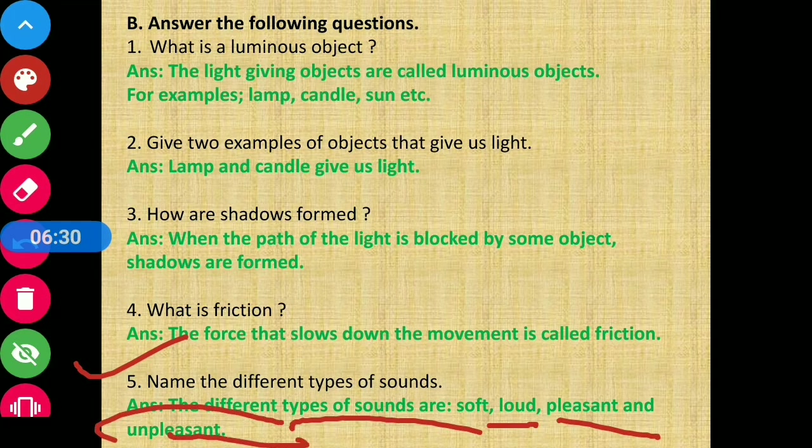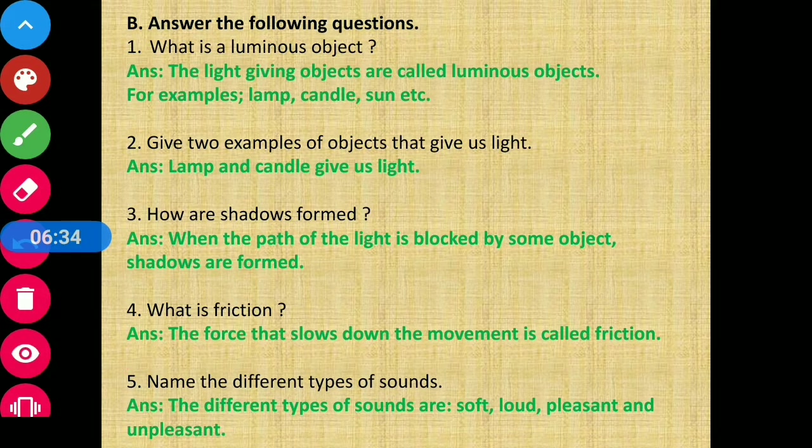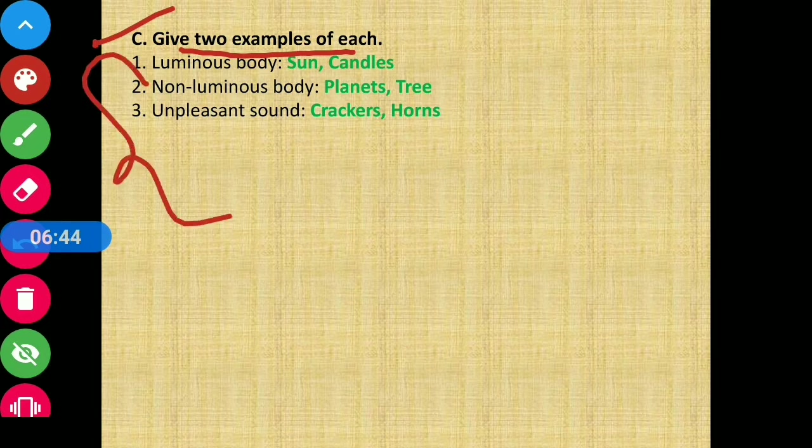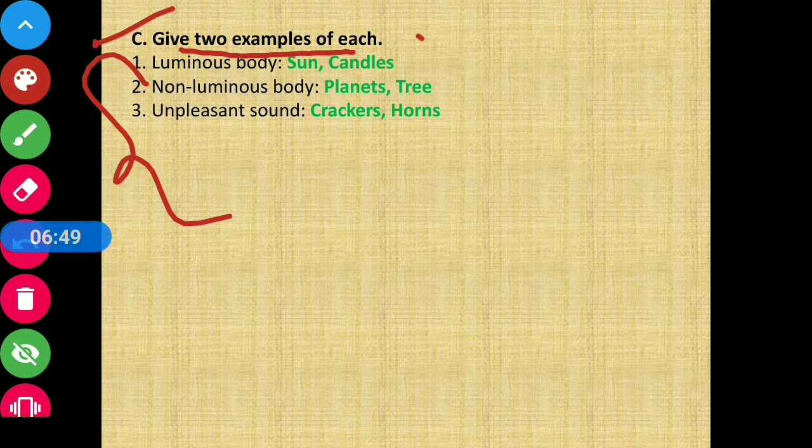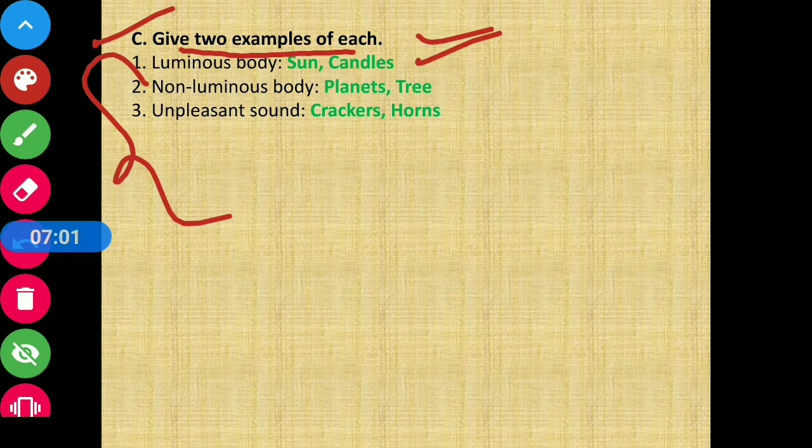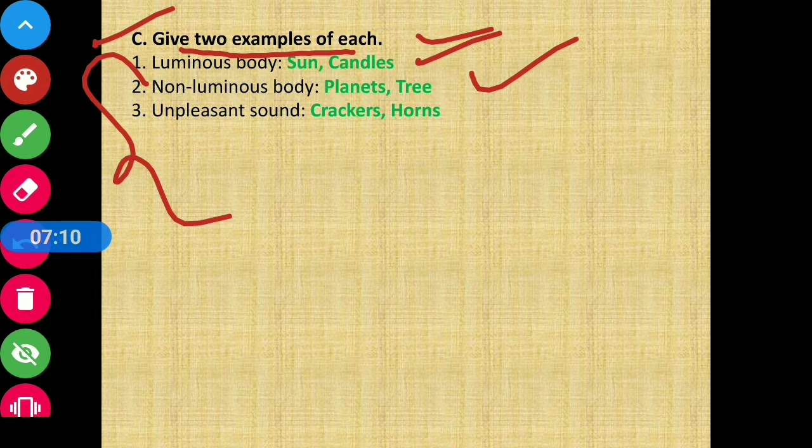Next section is Section C, asking to give two examples of each. First: luminous body. Obviously examples would be sun and candles. You can also write lamp. Next: non-luminous body. There are many examples - I have written planets and trees. You can write table, book, chair, anything you want.